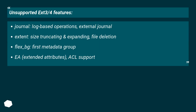Unsupported ext3/4 Features: Journal log-based operations, external journal. Extent size truncating and expanding, file deletion. flex_bg — first metadata group. EA — extended attributes. No ACL support.